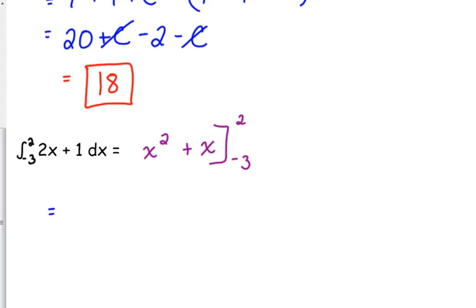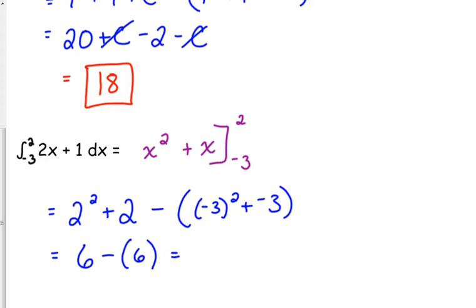So x squared plus x. Let's plug in 2. 2 squared is, well I'll just plug it in. Minus, make sure we get parentheses in the right places. 2 squared is 4 plus 2 is 6. Negative 3 squared is positive 9. 9 plus negative 3 is 6. And so 6 minus 6 is 0. You can get 0 as an answer.